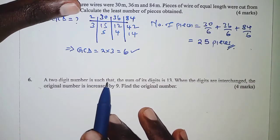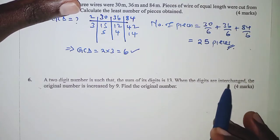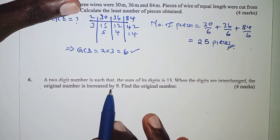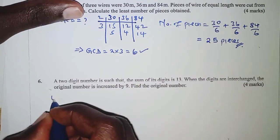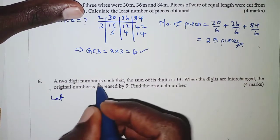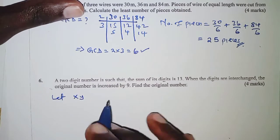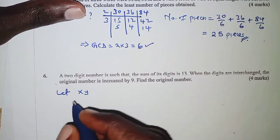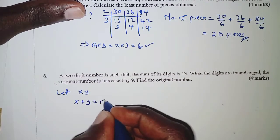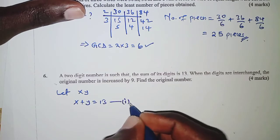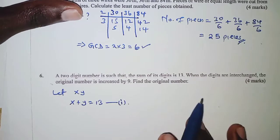A two-digit number is such that the sum of its digits is 13. When the digits are interchanged, the original number is increased by 9. Find the original number. First we will let the number be x, y, where x and y are the digits. So that the sum of its digits is 13, we have x plus y equivalent to 13. Let's have this as our first equation. Now, from the next statement, we will have the second equation.